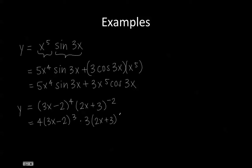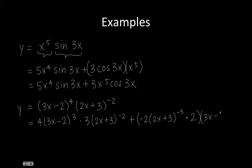Then we add the derivative of the second factor, which is negative 2 times 2x plus 3. Negative 2 minus 1 is negative 3, and then we multiply by the derivative of the inside function, which is equal to 2, and multiply by the first factor.